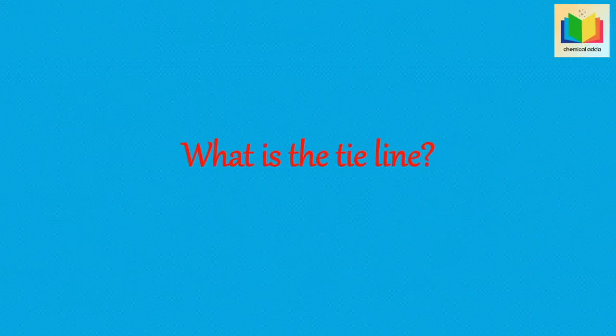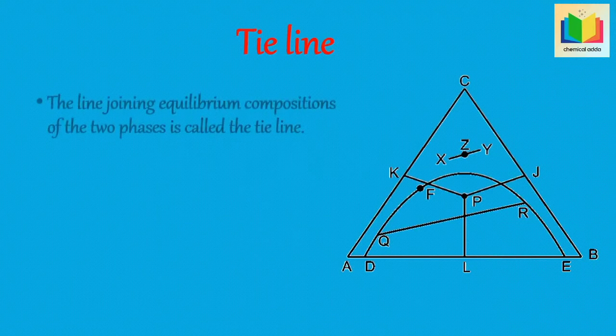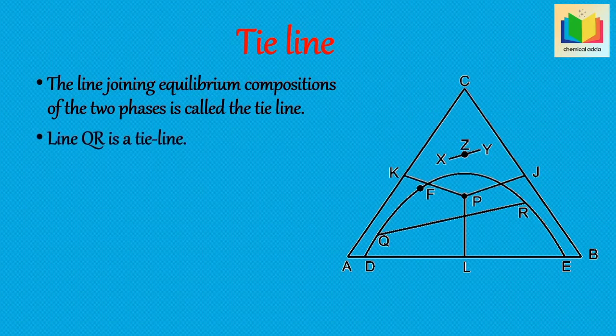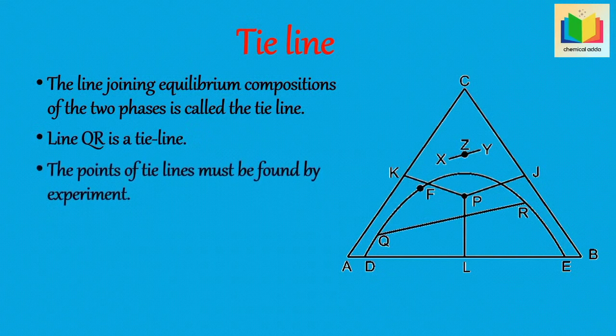Next question: what is the tie line? The line joining the equilibrium compositions of the two phases is called the tie line. In this triangular coordinate diagram, line QR is a tie line, which shows two layers that have compositions represented by points Q and R. The points of tie lines must be found by experiment.